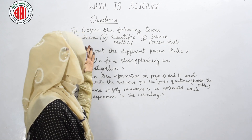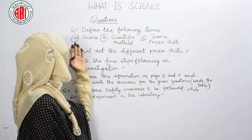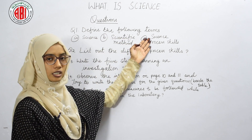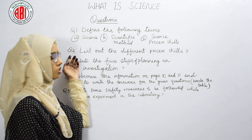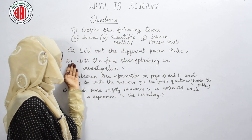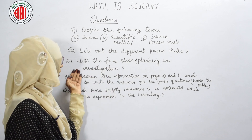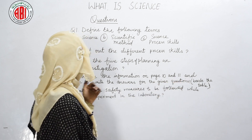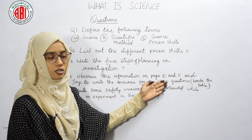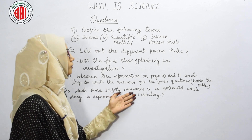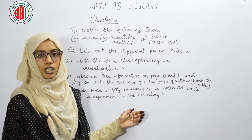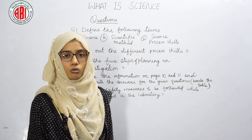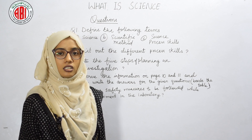To evaluate understanding, here are some core questions from the lesson: Define the following terms — science, scientific method, and science process skill. List the different process skills. Write the five steps of planning and investigation. Observe the information on pages 10 and 11 and write answers for the given questions. Write some safety measures to be followed while doing an experiment in the laboratory. Try to write answers in your own words based on the explanation.